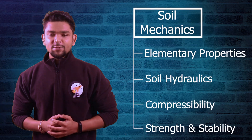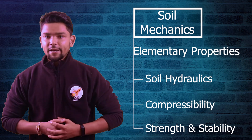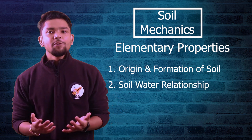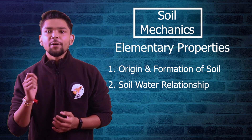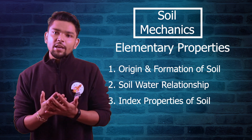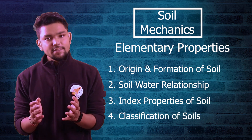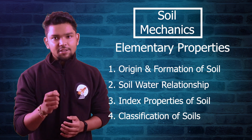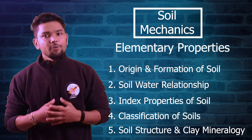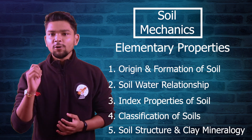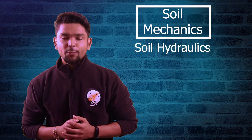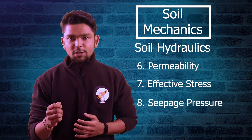For better understanding, we have sub-classified soil mechanics into four subcategories. We start with elementary properties — the origin and formation of soil, followed by basic properties in terms of weight, volume, and density of soil. Next we read about index properties of soil, which help a geotechnical engineer classify a soil, and hence our next chapter is classification of soil. In the last chapter of elementary properties we read about soil structure and clay mineralogy. From the next section onwards we read about derived properties, also known as engineering properties. In the soil hydraulics section, we study engineering properties like permeability, effective stress, seepage pressure and its analysis.